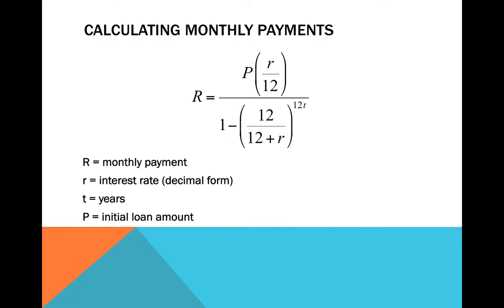So here's our formula. Big R, that's going to be our monthly payment, equals, on the numerator, P our principal, times our interest rate over 12 for the 12 months, divided by, on the denominator, 1 minus 12 divided by 12 plus the interest rate, and the exponent 12 times t, t being times in years.